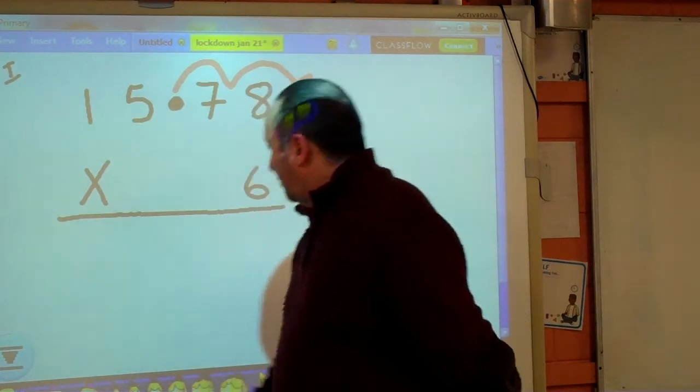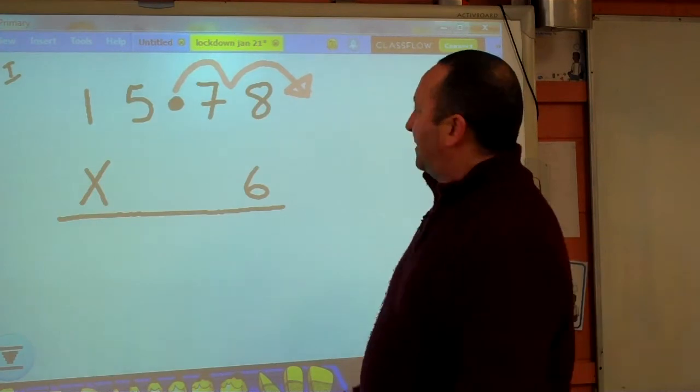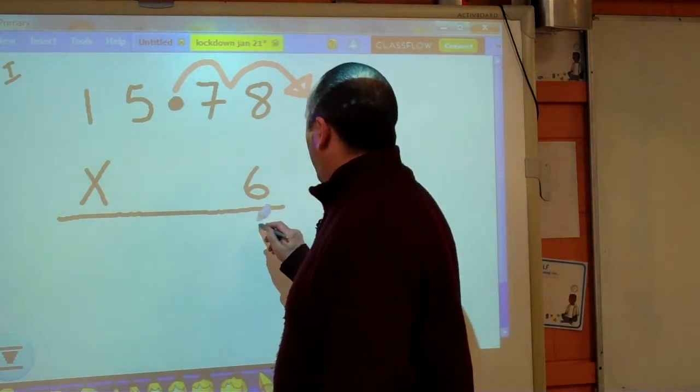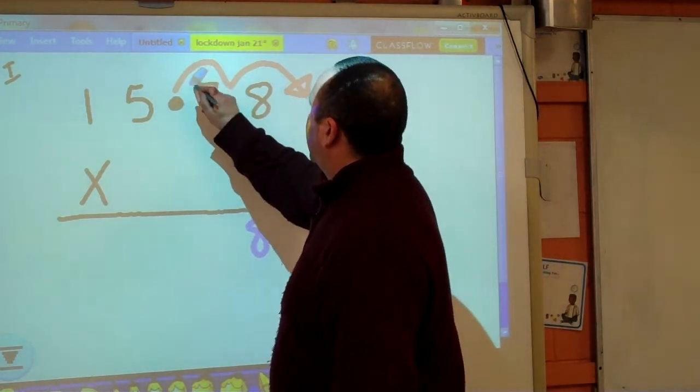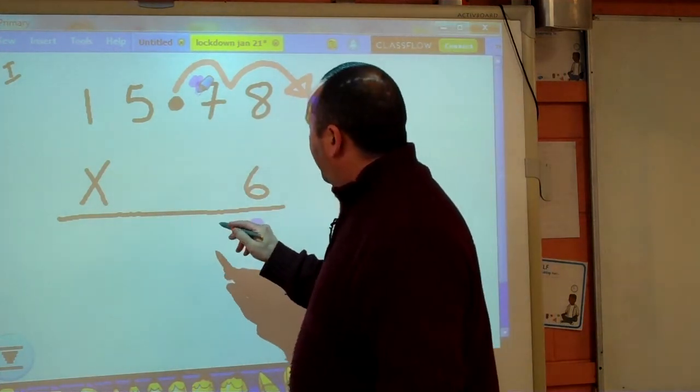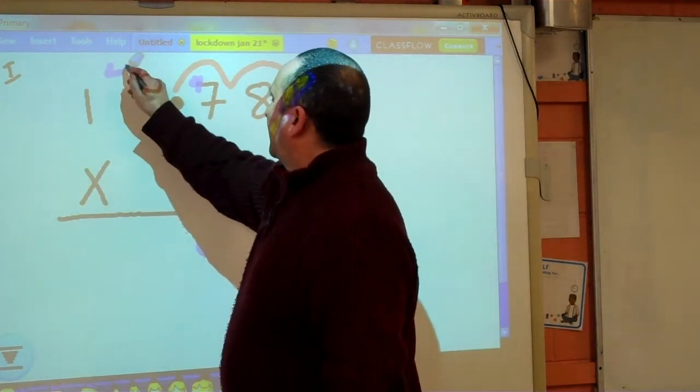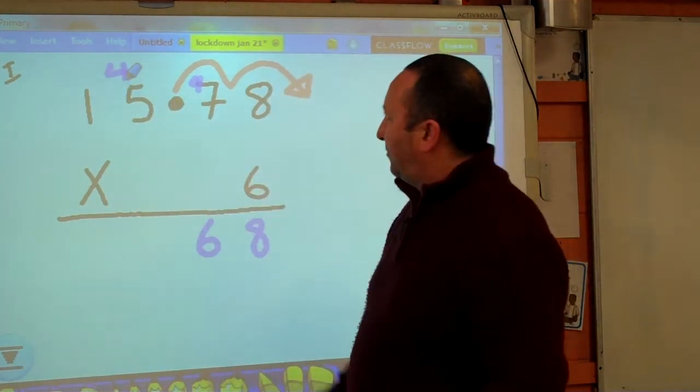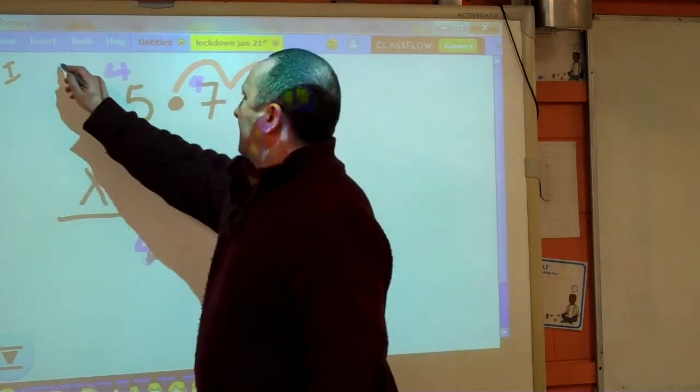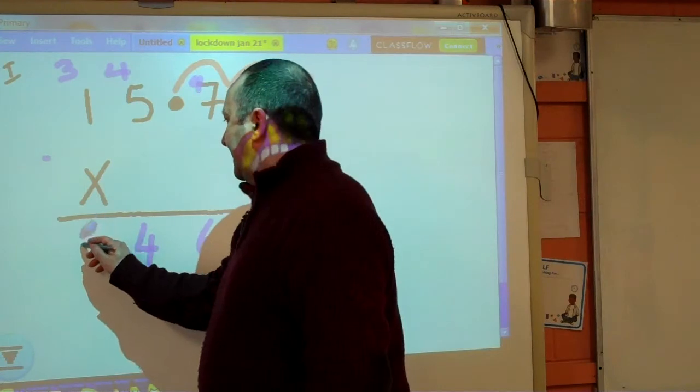So, going off doing my multiplication tables. We need to know our tables or have our table card in front of us. 6 8's are 48. 6 7's are 42, and 4 is 46. 6 5's are 30, plus 4 is 34. And 6 1's are 6 plus 3 is 9.